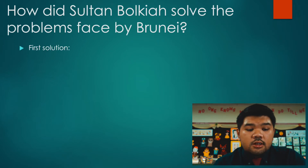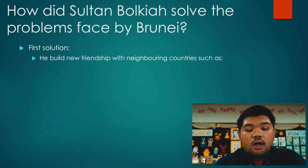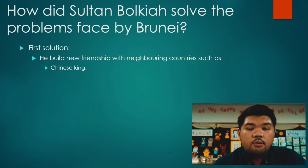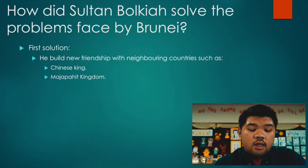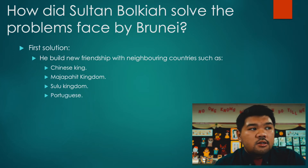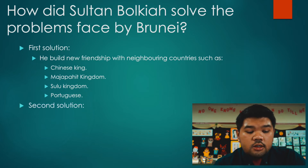The first solution was building new relationships with neighboring countries, such as the Chinese king, the Majapahit kingdom, the Sulu kingdom, and he also wanted to make a trade link with the Portuguese.